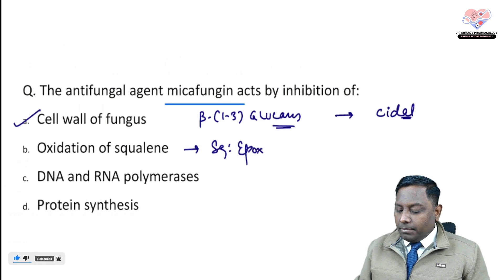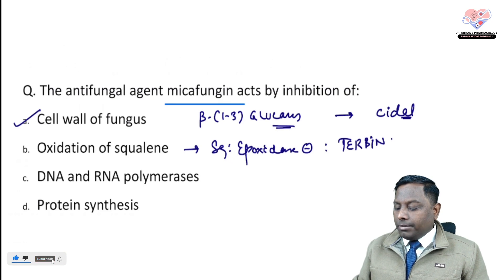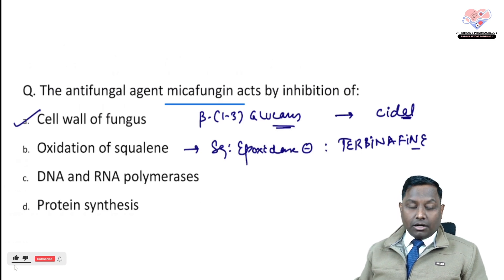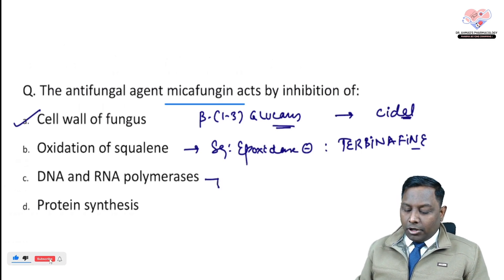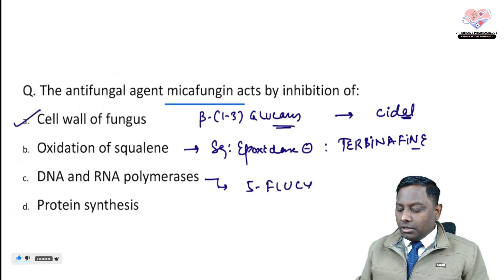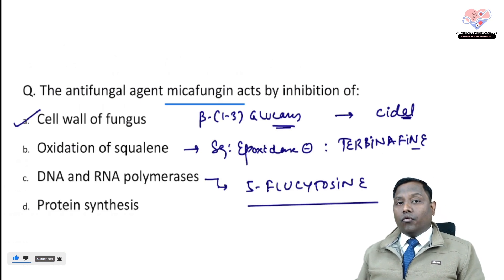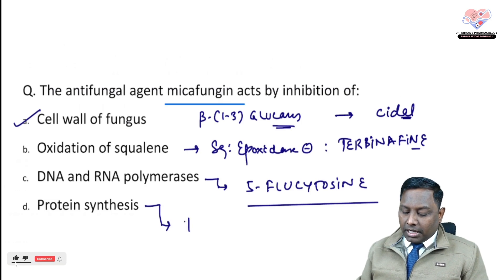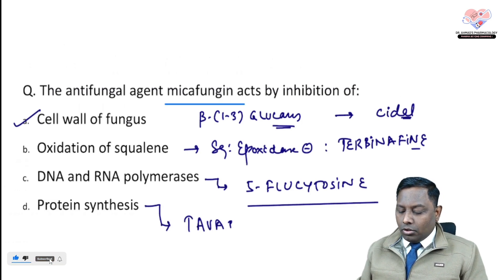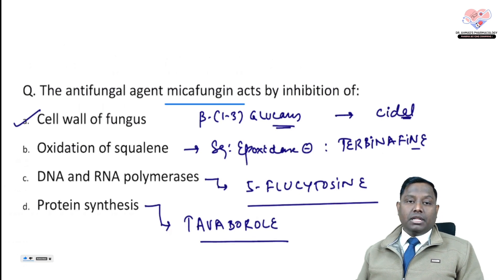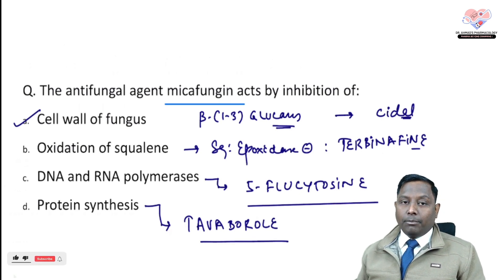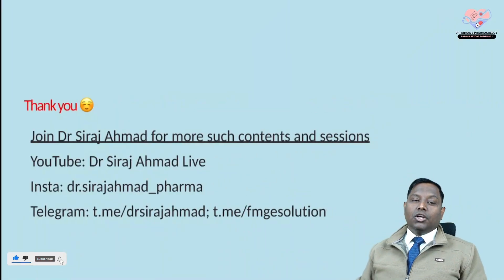Terbinafine is the squalene epoxidase inhibitor and is considered the drug of choice for dermatophytosis including onychomycosis. The DNA and RNA polymerase inhibitor is flucytosine — a highly effective drug for cryptococcal meningitis, often used in combination with amphotericin B. Tavaborole is a protein synthesis inhibitor — an important antifungal to remember.